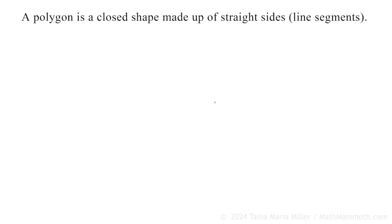Let's take a look at what is a polygon and what is not. Here I wrote: a polygon is a closed shape made up of straight sides or line segments. A line segment is a piece of a line, and if we have several of these connected to each other, then we get a polygon.